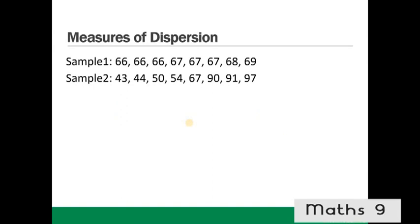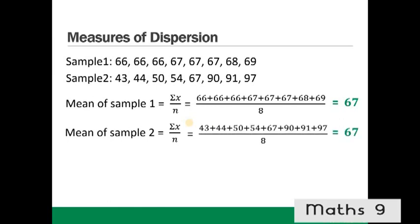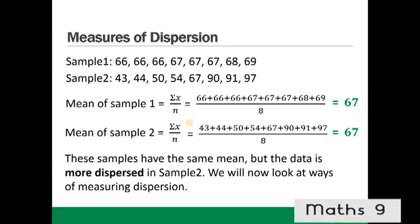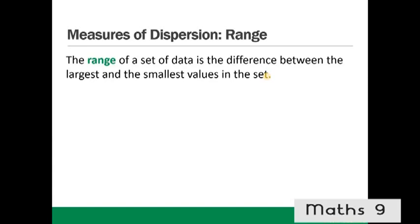Measures of dispersion. Two samples can have the same mean of 67, but the data in sample two is much more dispersed — values are more spread out across a wider range. The range of a set of data is the difference between the largest and smallest values: range = largest value − smallest value.